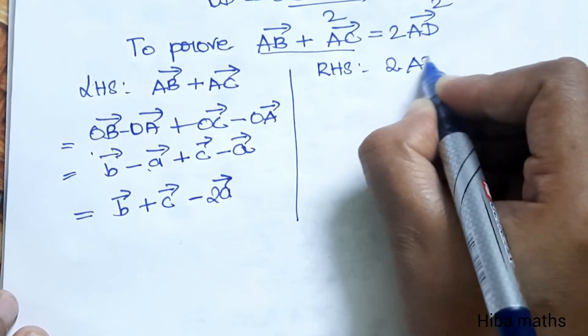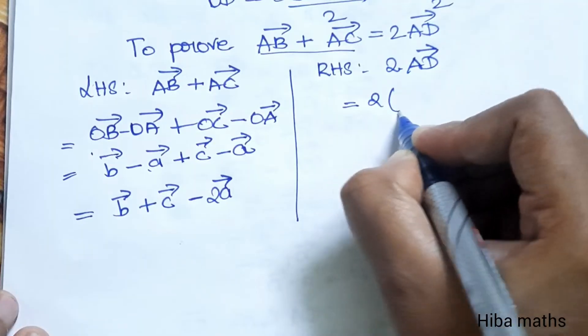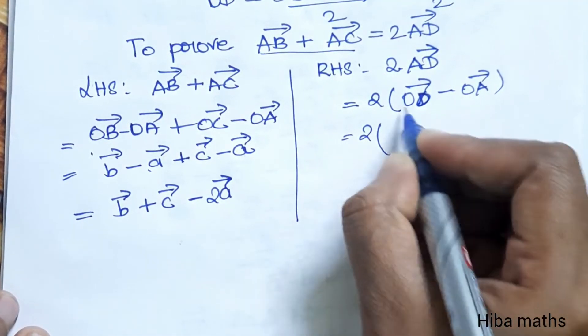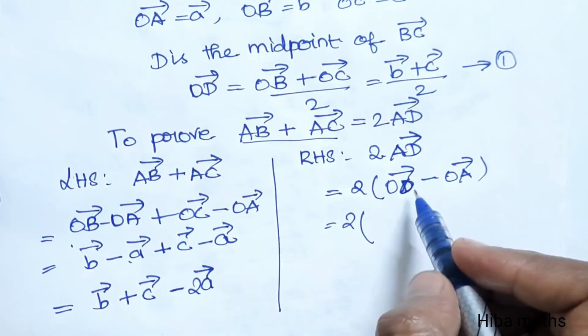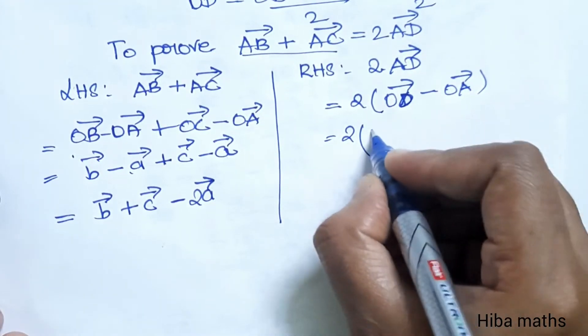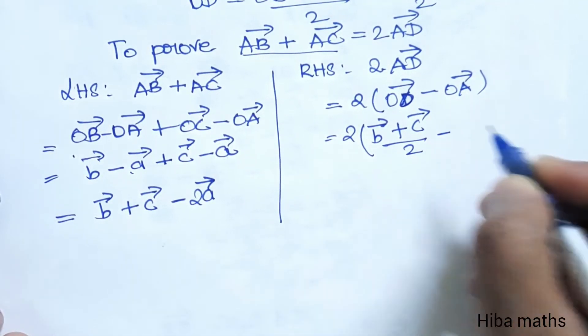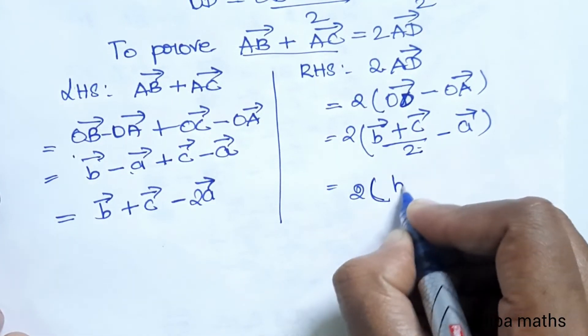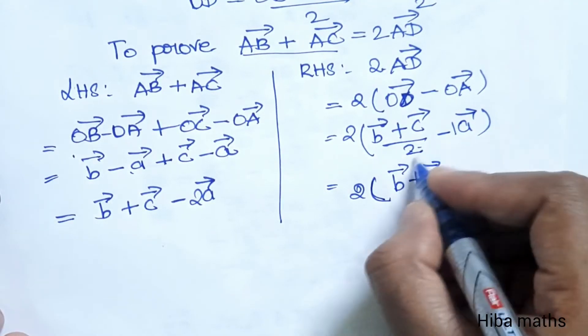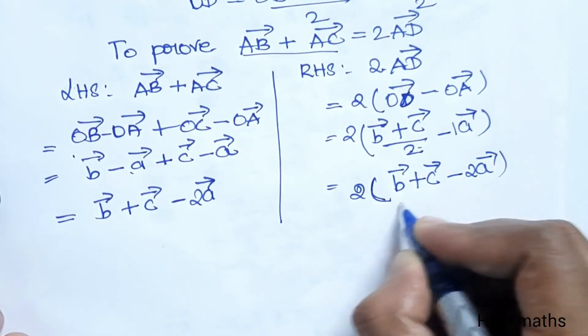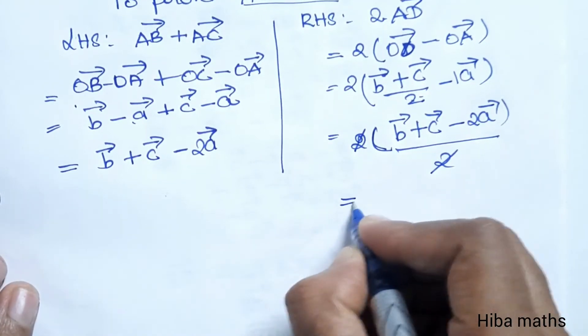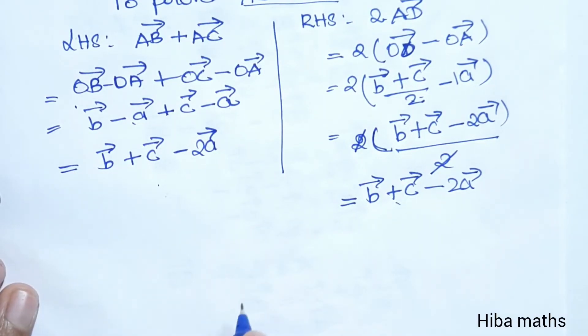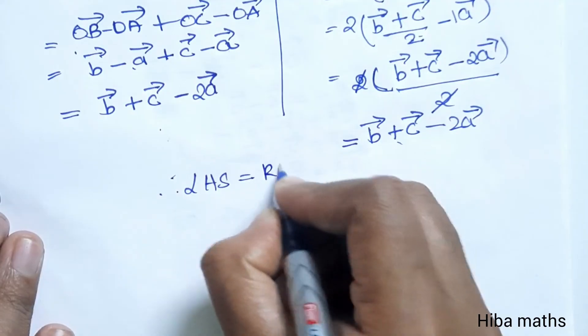RHS: 2 times AD vector equals 2 into (OD vector minus OA vector). OD vector value is (B vector plus C vector) divided by 2. So this becomes 2 into ((B vector plus C vector) divided by 2 minus OA vector). Simplifying: 2 into (B vector plus C vector minus 2 times OA vector) divided by 2 equals B vector plus C vector minus 2A vector. LHS is equal to RHS.